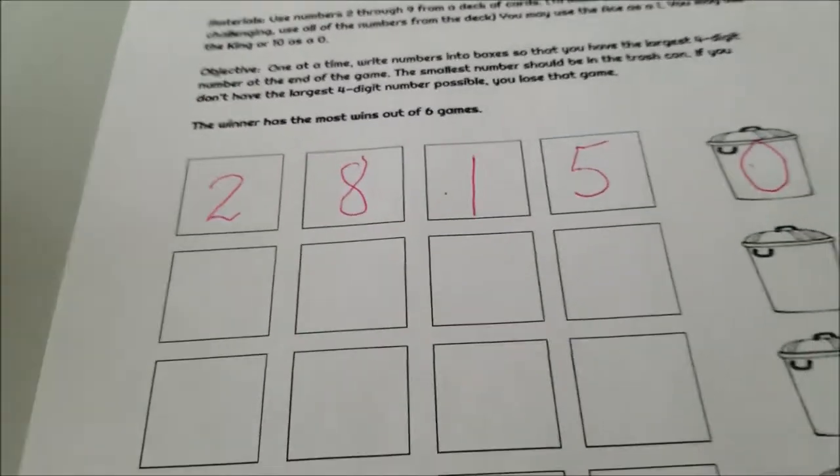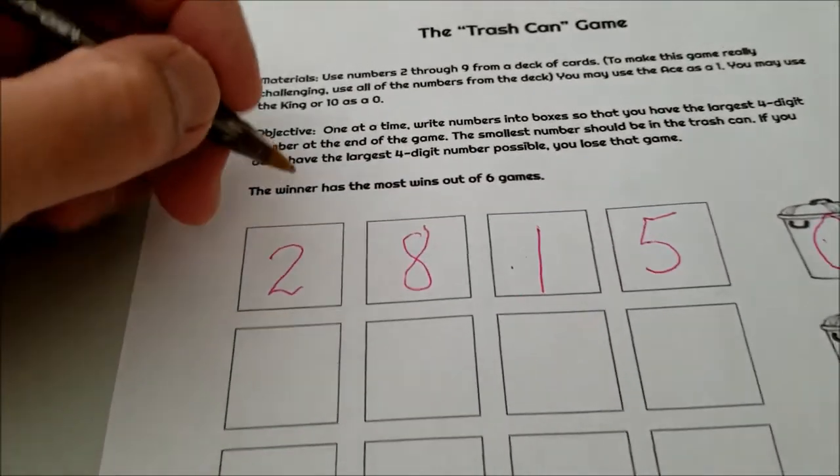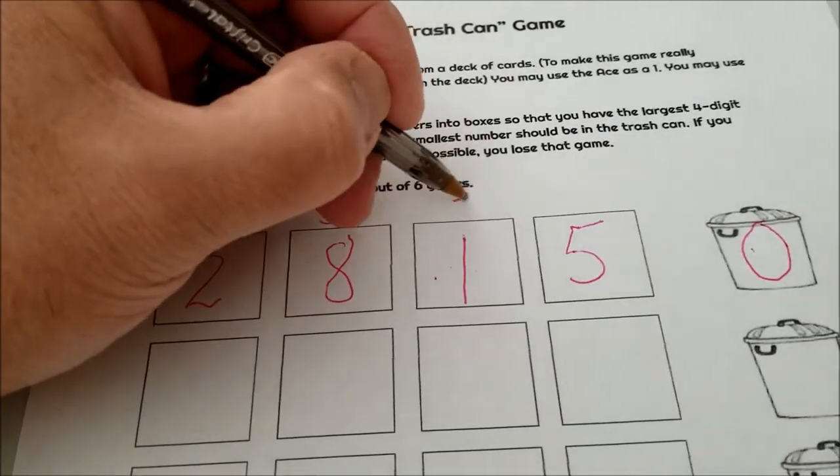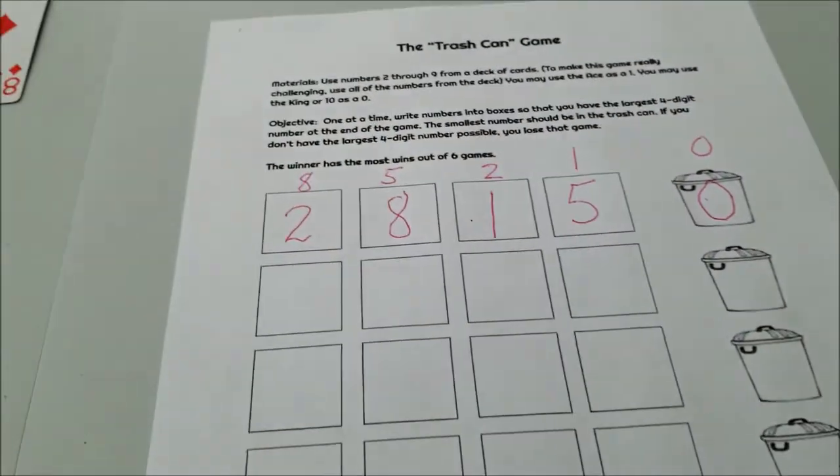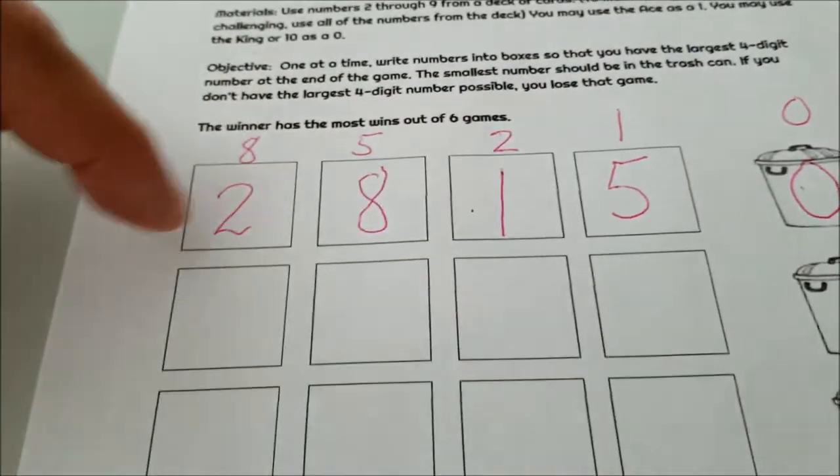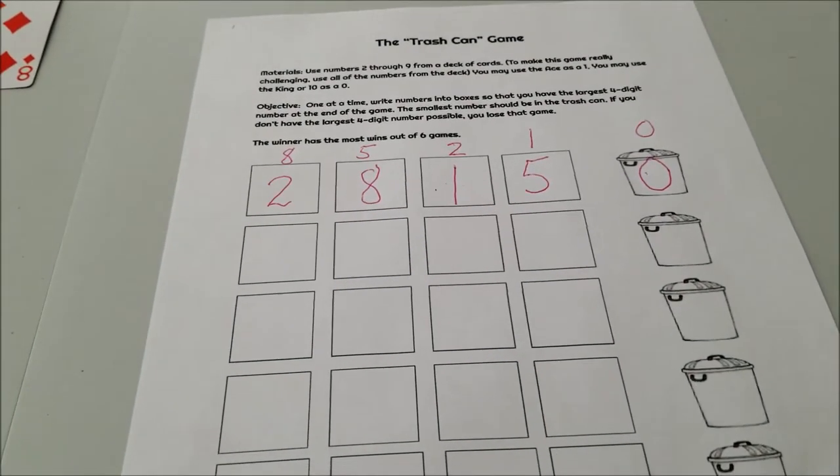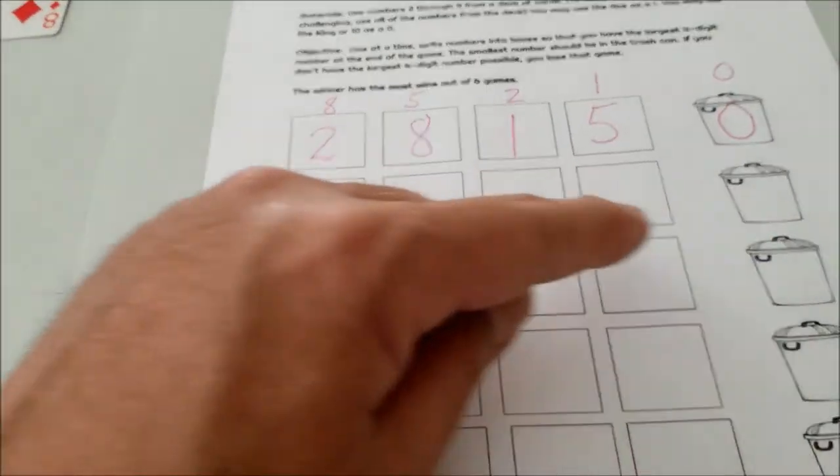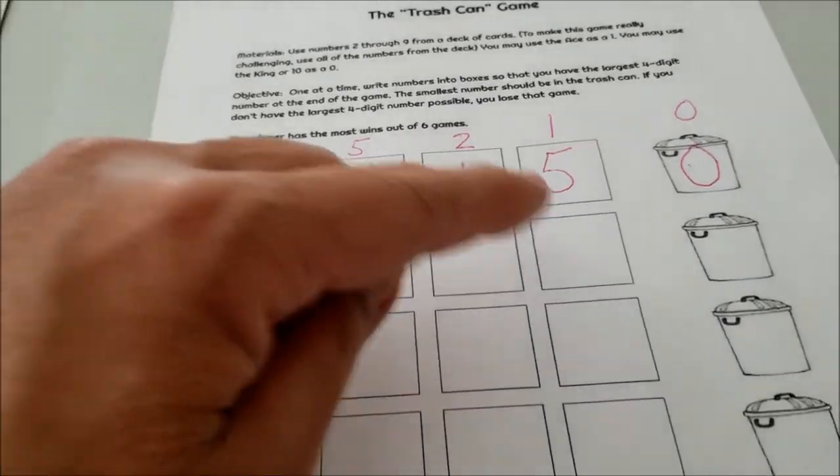Okay, so the numbers that were picked were 2, 8, 1, 5, 0. The largest number we could have made would have been an 8, 5, 2, 1, and the zero we did put in the right place. So that would have been the winning number right here: 8521. We didn't have that set up. So we lost. So you can see how this game is super challenging. You never know what card's going to be under here. And you have to kind of get lucky and definitely do some strategizing to see where should you put certain numbers.